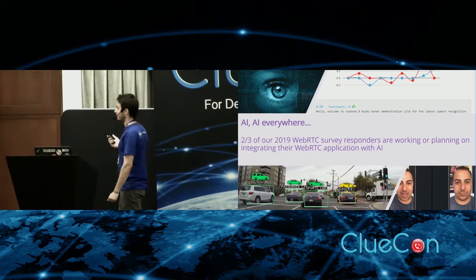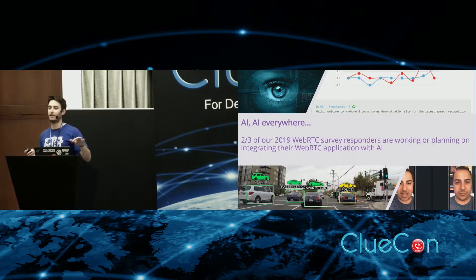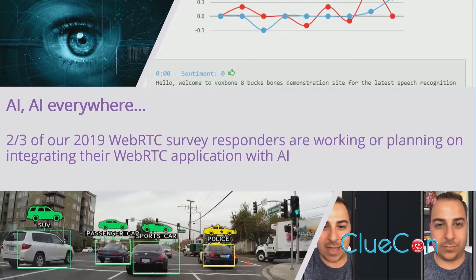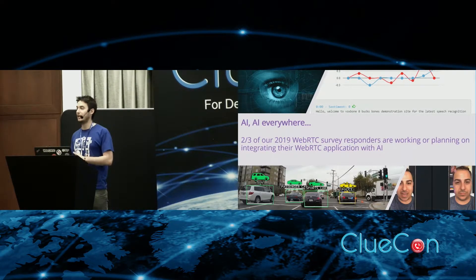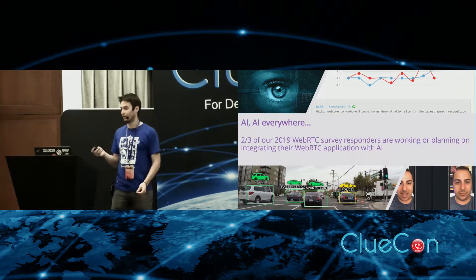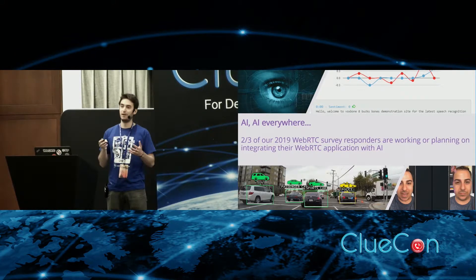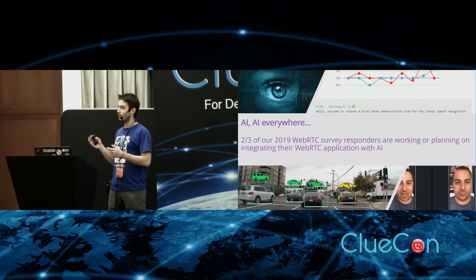Why machine learning? There are several technologies very commonly used with WebRTC — IoT devices, live streaming, and a lot of use cases with AI. We recently published a survey and asked WebRTC developers what the most popular technologies they use are. Two-thirds of them said they are already implementing some kind of machine learning AI, or they are planning to do so. And usually in AI, there are four or five very common use cases for WebRTC applications.